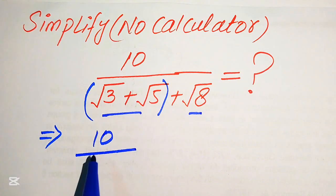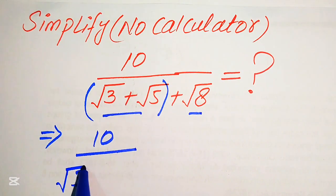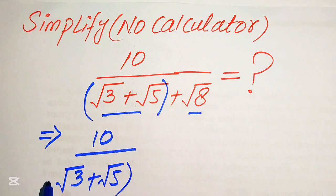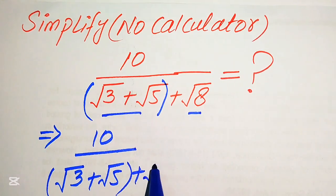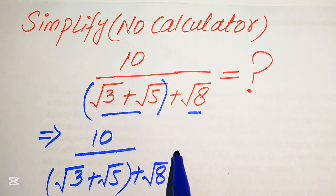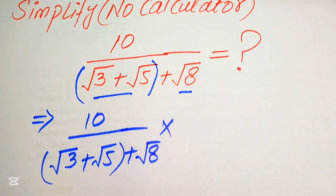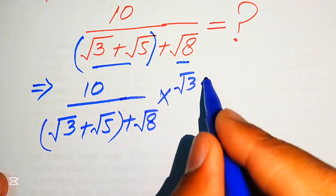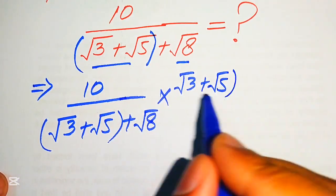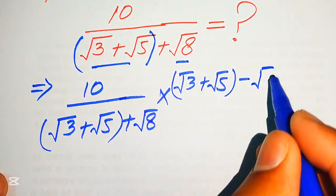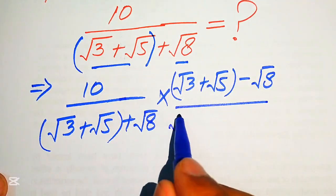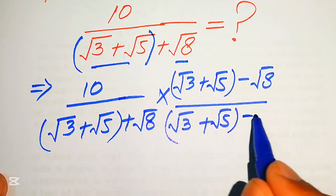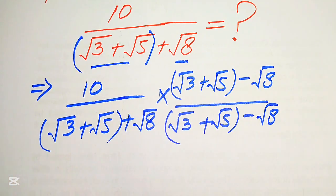So it is written as 10 divided by (square root of 3 plus square root of 8) plus (square root of 5 plus square root of 8), multiplied by (square root of 3 plus square root of 5 minus square root of 8) divided by (square root of 3 plus square root of 5 minus square root of 8).